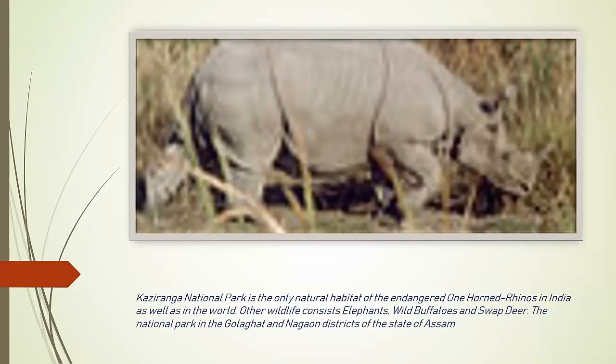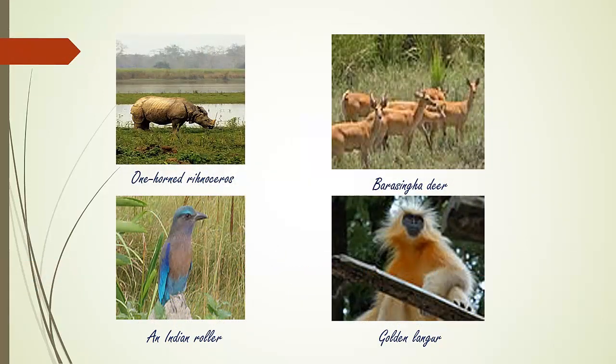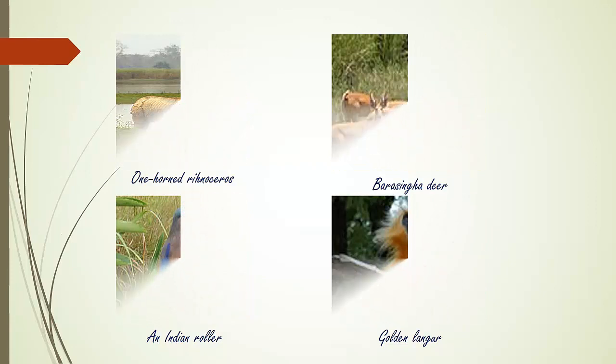Kaziranga National Park from Assam. This national park is the only natural habitat of the endangered one-horned rhinoceros. The park is located in Golaghat and Nagaon districts of the state of Assam. Examples of wildlife in Kaziranga National Park include the One-horned Rhinoceros, Barasingha Deer, Indian Roller, and Golden Langur.